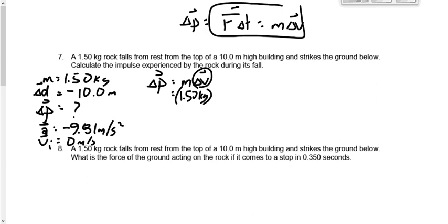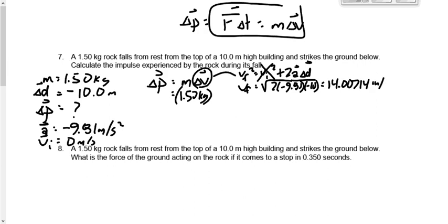How are we going to find VF? VF squared is equal to VI squared plus 2AD. It's the one that we almost always seem to use here. So VF is equal to the square root of 2 times negative 9.81 times negative 10, which gives me a VF of 14.00714.